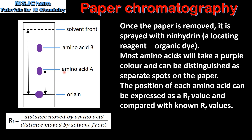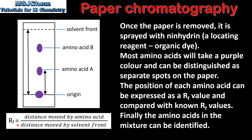For amino acid A, the small arrow represents the distance moved by the amino acid and the large arrow represents the distance moved by the solvent, which is the solvent front. Once the retention factor has been calculated and compared with known retention factor values, the amino acids in the mixture can be identified.